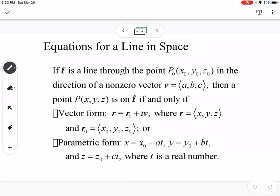This last one, we're going to go through slow because this is probably the most complicated thing that we're going to do here. Equations for a line in space. If L is a line through the point P₀ in the direction of a nonzero vector V, then point P(x, y, z) is on L if and only if - we have two forms - vector form, which is r = r₀ + tv, where r is (x, y, z) and r₀ is your vector (x₀, y₀, z₀). Or parametric form, which is going to give you a value for each your x, your y, and your z, where t is a real number. We're going to work through an example of this.